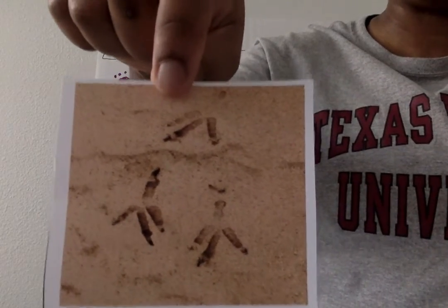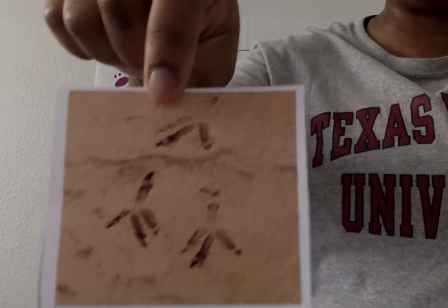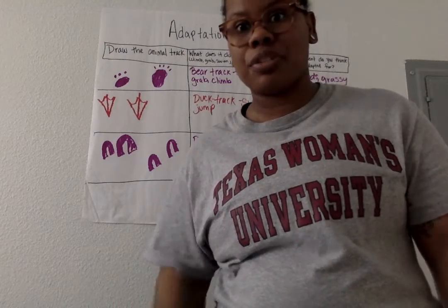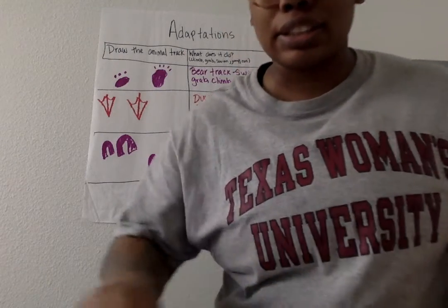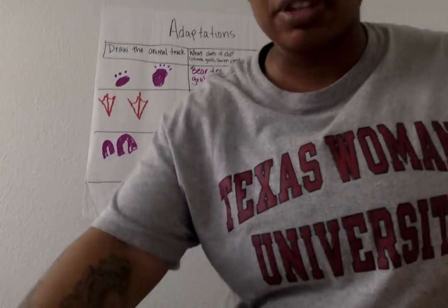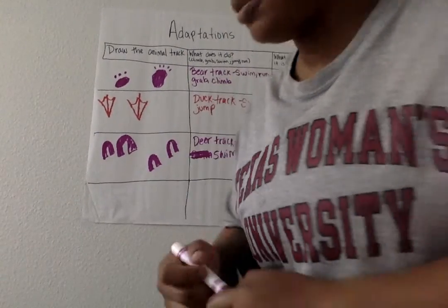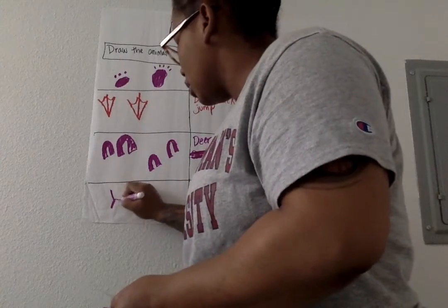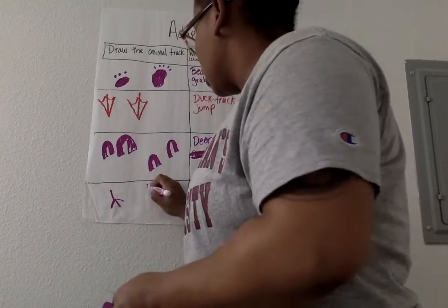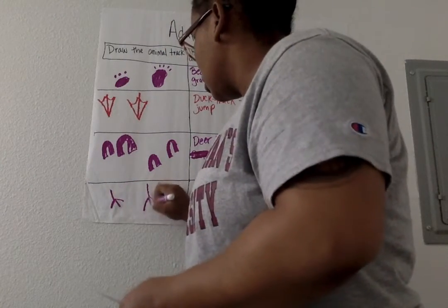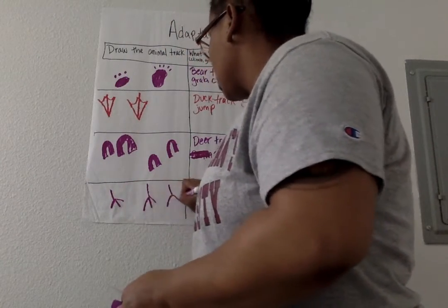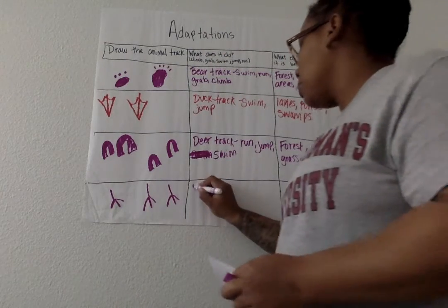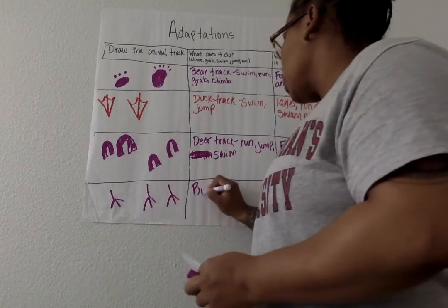Right off the bat, this just looks like what kind of feet? Chicken feet, right? Because that's what I thought when I looked at it. So knowing that it's a bird, I'm just going to draw it. Looks like chicken feet — I'm going to put bird track.